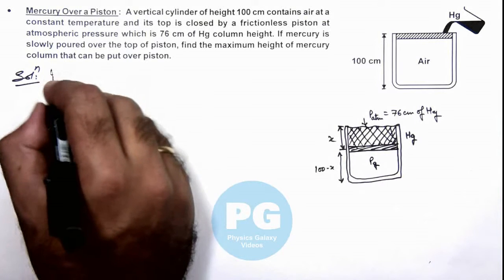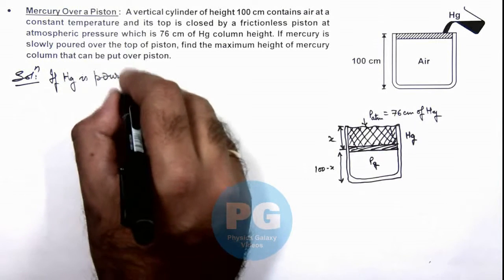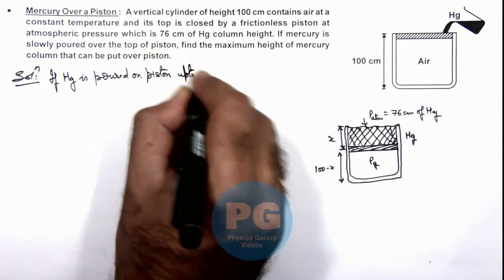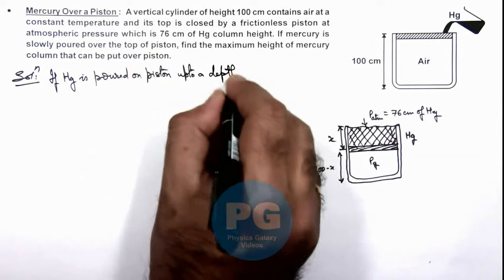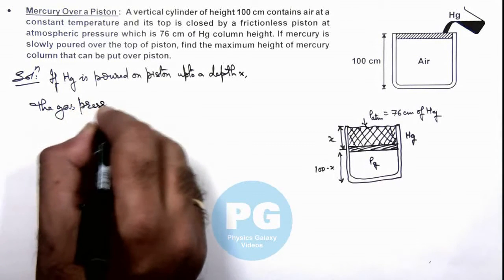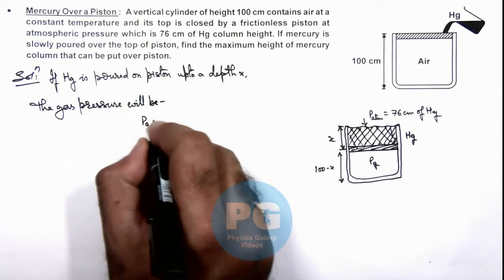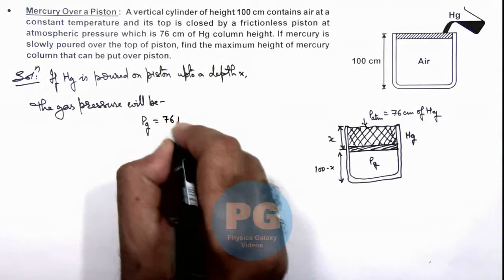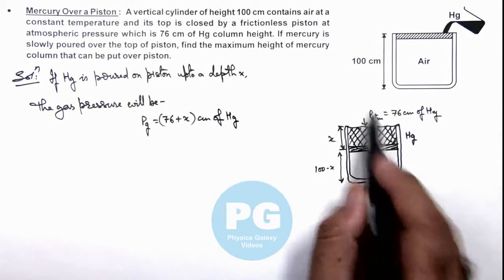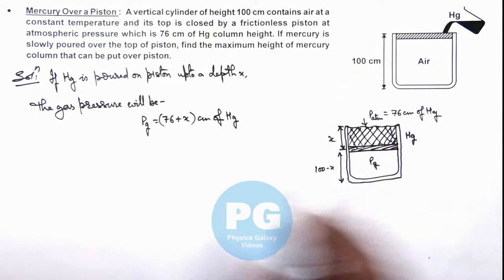So we can write, if mercury is poured on the piston up to a depth x, the gas pressure will be, this gas pressure can be written as 76 plus x centimeters of mercury, because 76 centimeters of mercury is the pressure of atmosphere and x centimeters of mercury is further taken.